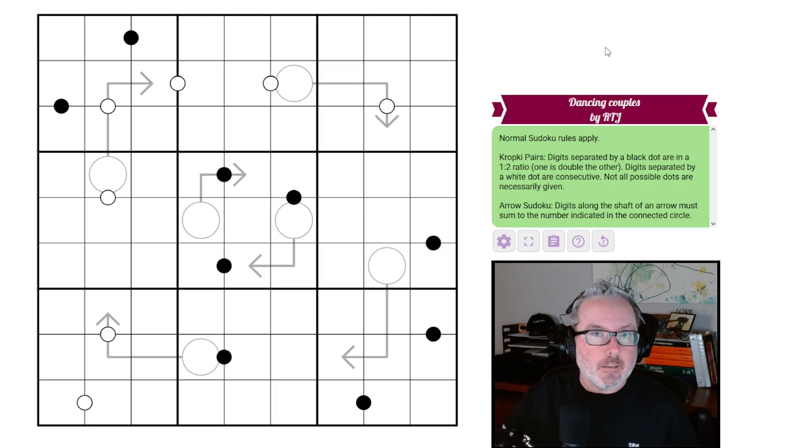Let's jump into the rules of this thing. So normal Sudoku - every row, column, and three by three box will contain the digits one through nine once each. We also have kropki pairs. Digits separated by a black dot are in a one to two ratio. Digits separated by a white dot are consecutive. Not all possible dots are necessarily given. Then we also have arrows. Digits along the shaft of an arrow must sum to the number in the connected circle.